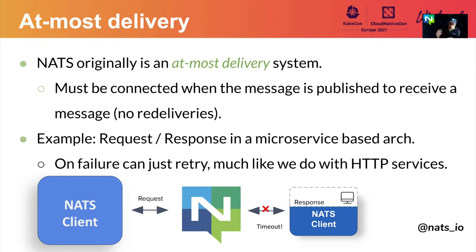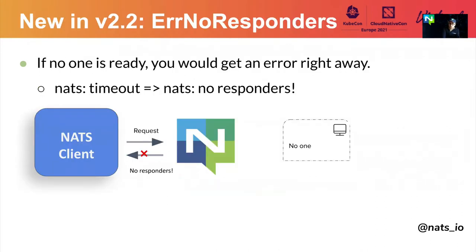If there is no one listening when you make a request in NATS, you can just retry making the request — something that we also do with HTTP services. Something new in V2.2 is that instead of a NATS timeout when making a request, you now get a very fast error called the no-responders error, which is kind of like an analog of the HTTP 503 status. Now your clients can very quickly detect whether there's interest in the subject and then try another logic.